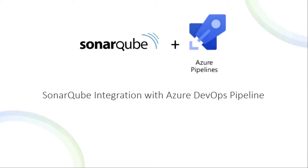SonarCube is an open source platform developed by SonarSource for continuous inspection of code quality to perform automatic reviews with static analysis of code to detect bugs, code smells, and security vulnerabilities on 20 plus programming languages.